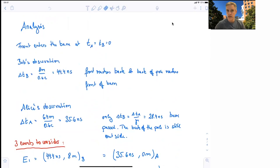Assume that the front of the pole enters the barn at time equals zero for both Bob and Alice. Then Bob observes the pole entering his barn, and it takes 44.4 nanoseconds, 8 meters divided by 0.6 times the speed of light, for the front of the pole to reach the back of the barn, and the back of the pole to reach the front of the barn. So after 44 nanoseconds in Bob's reference frame, the pole is in the barn.